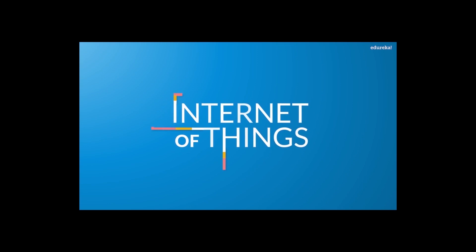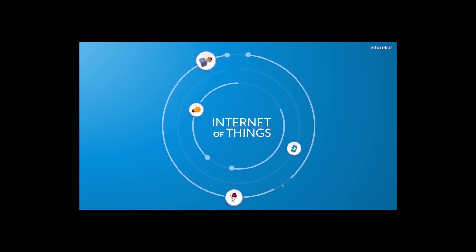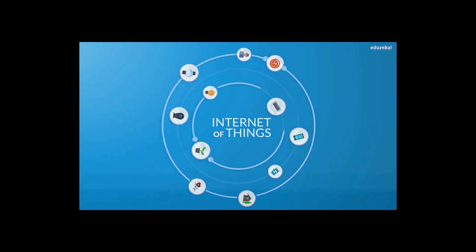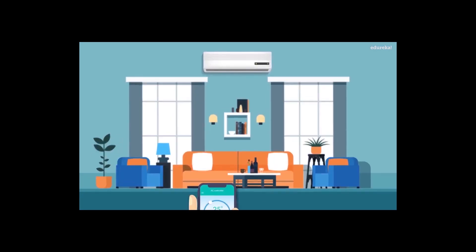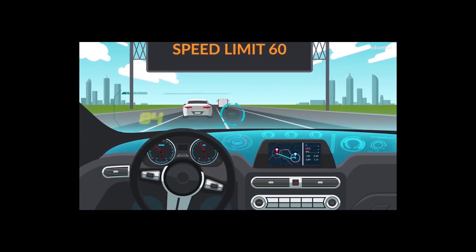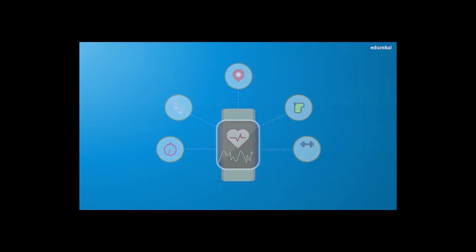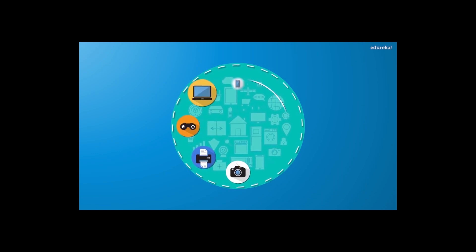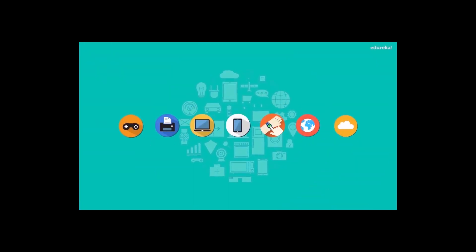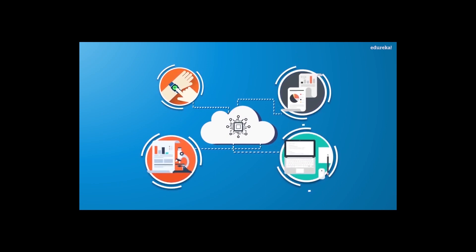The Internet of Things, or IoT, is influencing our lifestyle from the way we react to the way we behave. From air conditioners that you can control with your smartphone, to smart cars providing the shortest route, or your smartwatch which is tracking your daily activities, IoT is a giant network of connected devices. These devices gather and share data about how they are used and the environment in which they are operated.